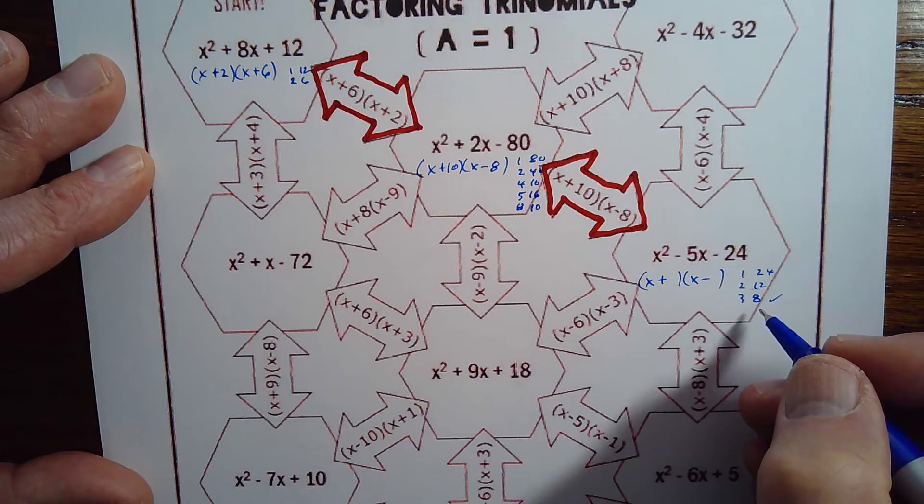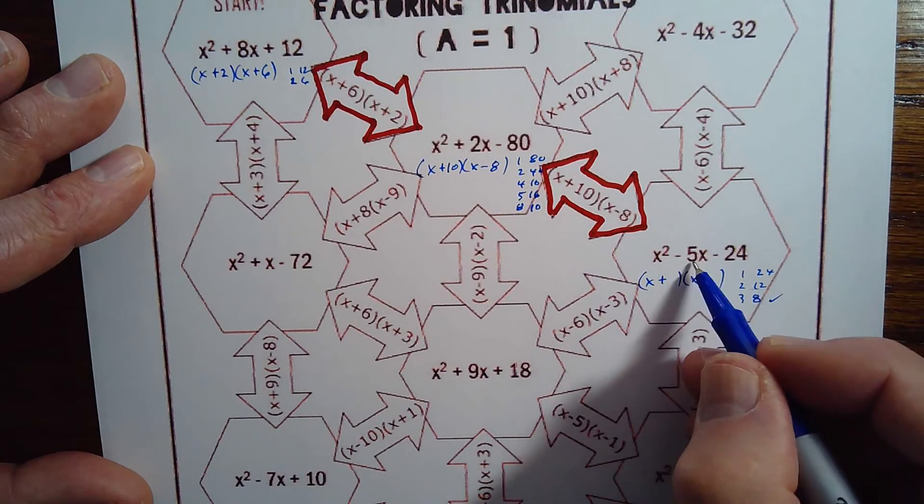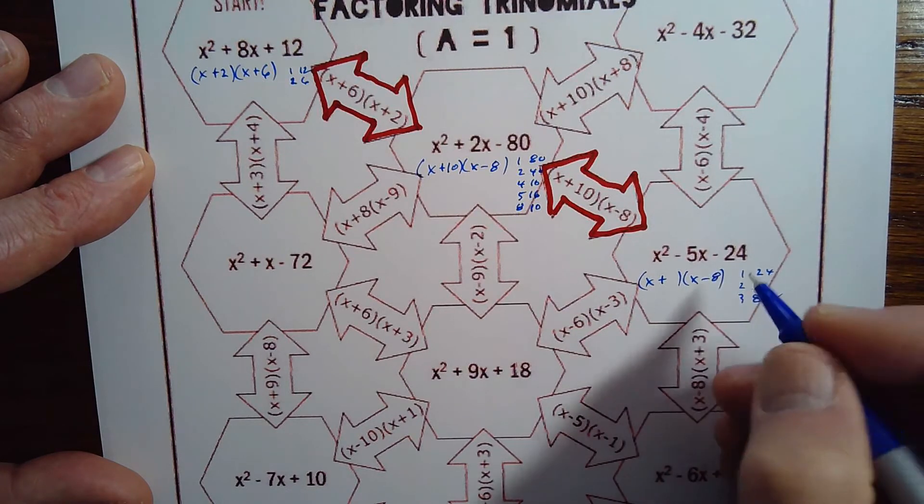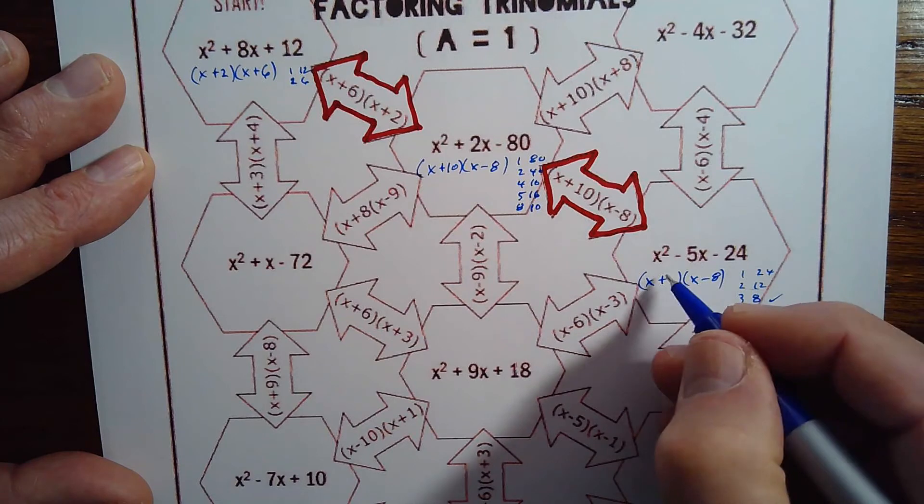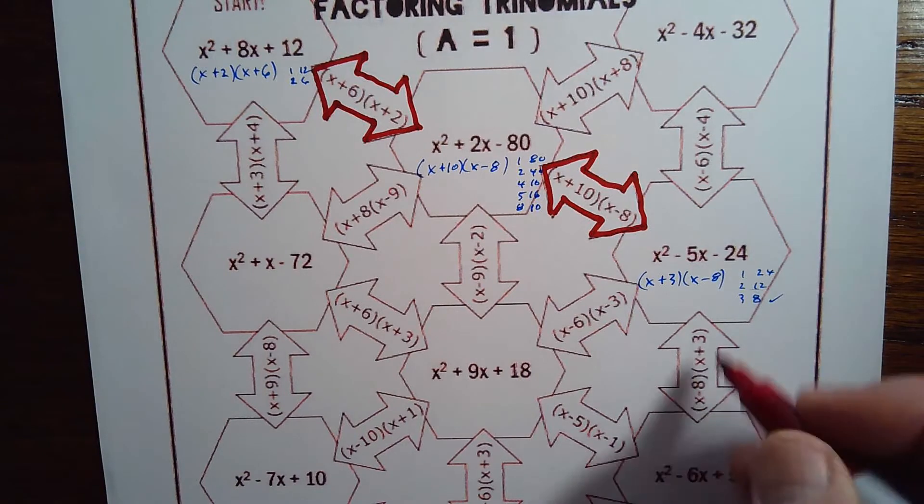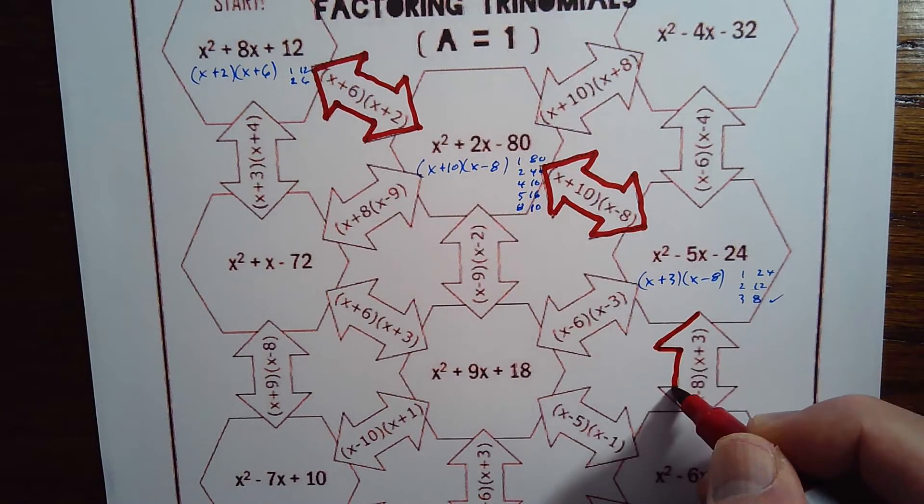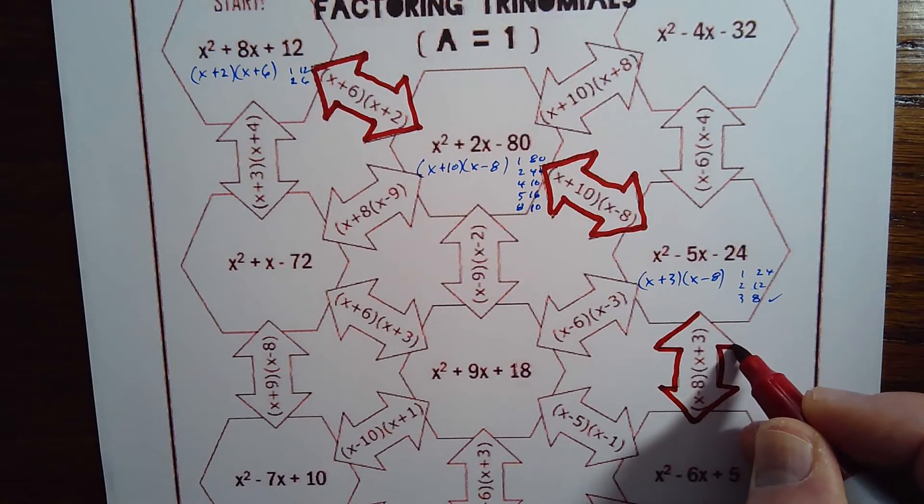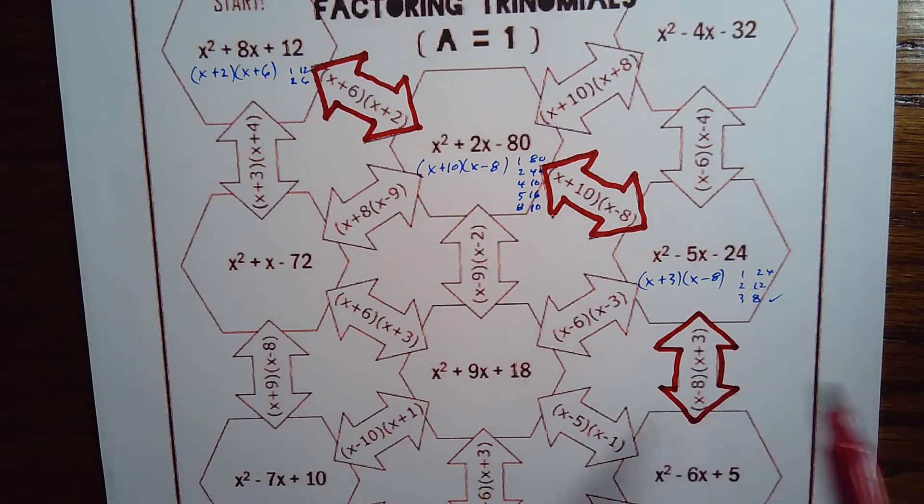Now which one should be negative? It's a negative 5 for the middle term. That tells me that I need more negative, so 8 would be the one that's negative and 3 would be the one that's positive. And it looks like we are straight down here. So there's my correct answer. Notice they had the x minus 8 first. Doesn't matter, the two binomials can be in either order.